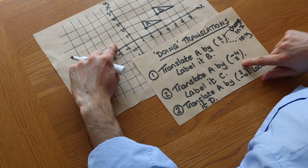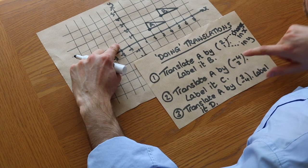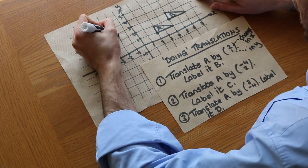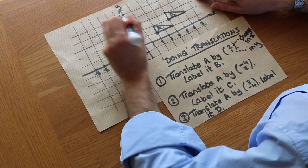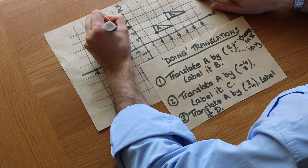And the Y value is changing by 2, so increasing by 2. So 1, 2. It's there. And then again, we just draw the rest of the shape. So that's going right by 2. It's going up by 1 here. And then like that. And that's C.